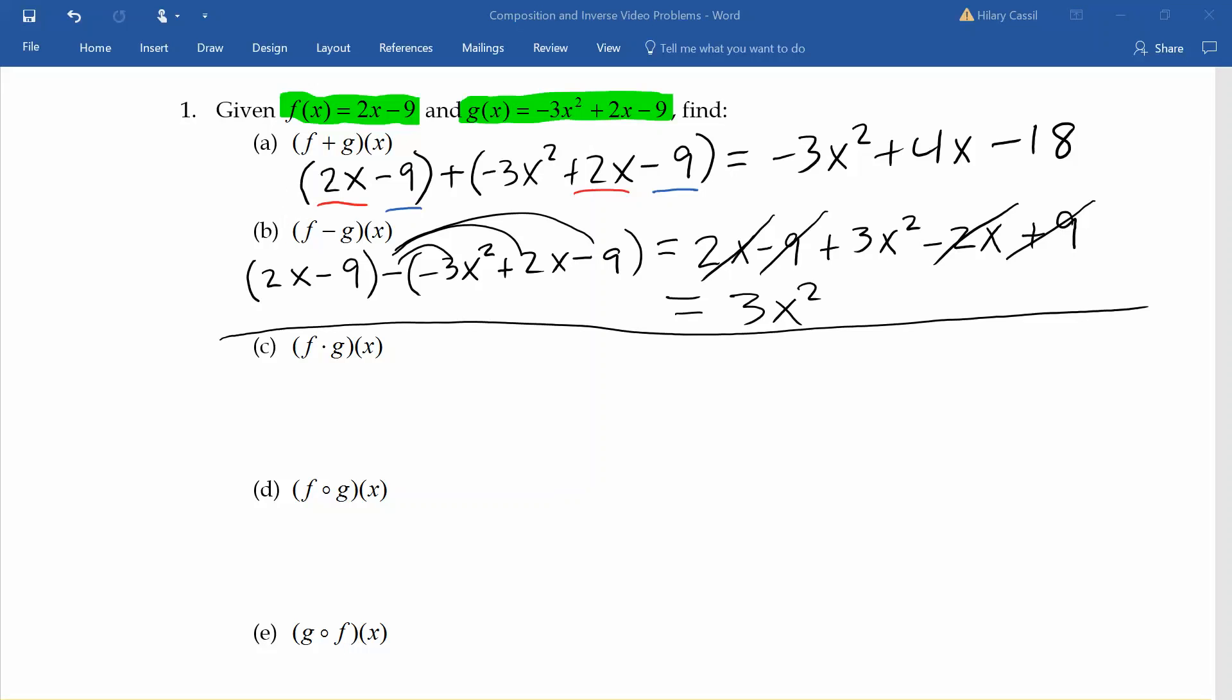Next we'll multiply these functions. One way to think about this is distribution. We're going to take the first term, 2x, and distribute it to each of the three terms in our second parentheses. Remember when we multiply terms with the same base, we add our exponents. So far we have negative 6x cubed plus 4x squared minus 18x.